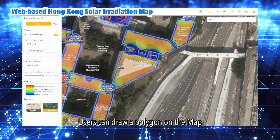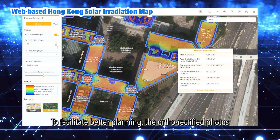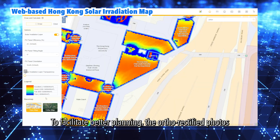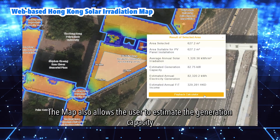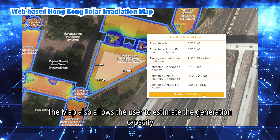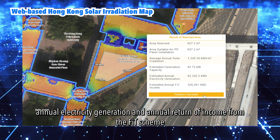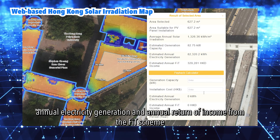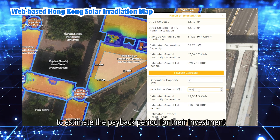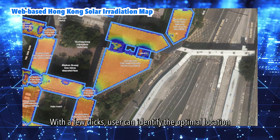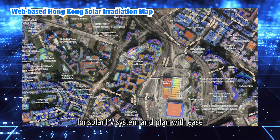Users can draw a polygon on the map to identify suitable locations for installing solar PV panels. To facilitate better planning, the orthorectified photos help users identify the exact locations of their rooftops. The map also allows the user to estimate the generation capacity, annual electricity generation, and annual return of income from the FIT scheme. Users can also use the payback calculator to estimate the payback period for their investment. With a few clicks, users can identify the optimal location for a solar PV system and plan with ease.